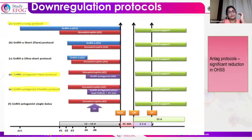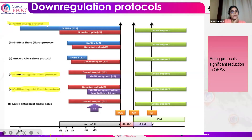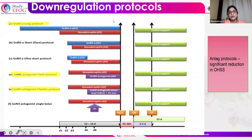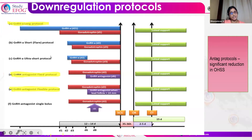Gonadotrophins stimulate the ovaries to produce more follicles, but this causes an LH surge, which will be suppressed by the antagonist or the agonist. In the GnRH long protocol, when we give the gonadotrophin agonist for a long time, this causes endogenous suppression of gonadotrophins. When we give gonadotrophins from outside, it causes stimulation while LH remains suppressed. Once the follicles are mature, the trigger can be given, followed by ovum pickup and luteal phase support. The GnRH agonist long protocol is one of the commonly used protocols.